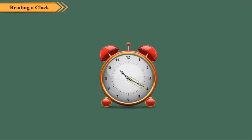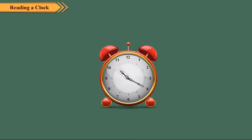In this clock, the minute hand is at 4. It means 5 × 4, which equals 20 minutes have passed. The hour hand is between 10 and 11, and the minute hand is in the first half hour. So, we write the time as 20 minutes past 10, or 10:20.